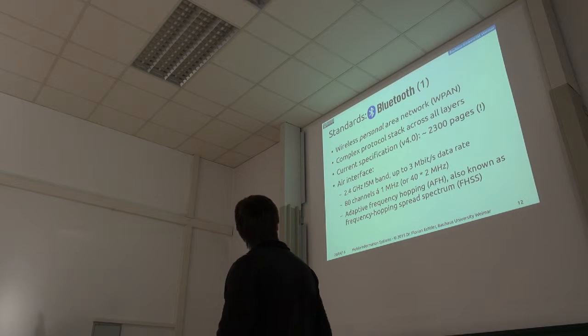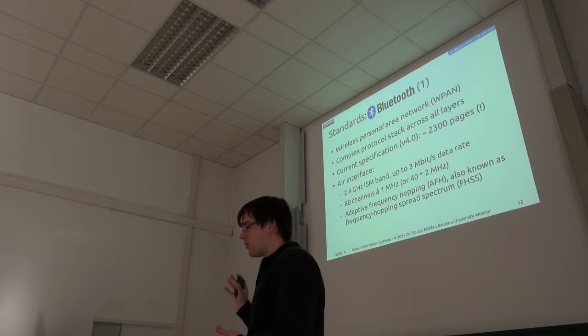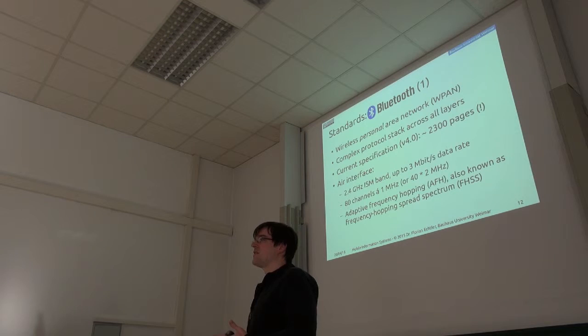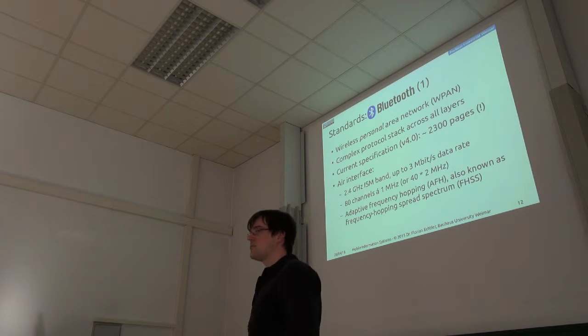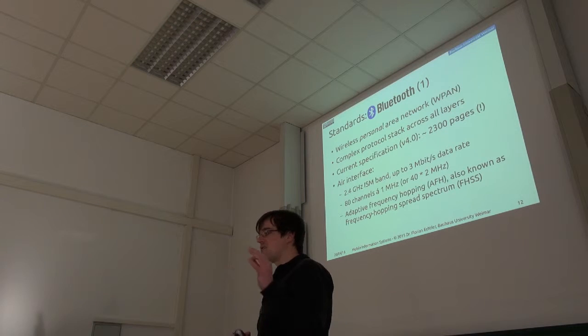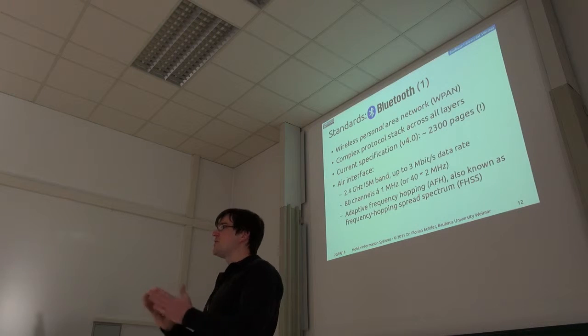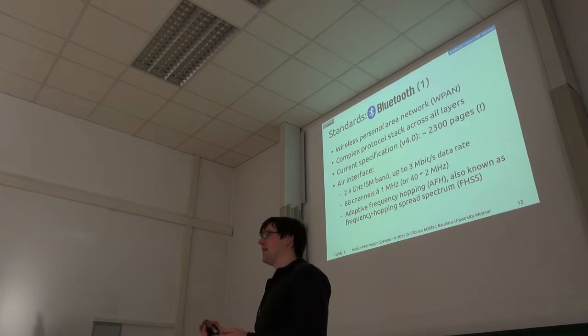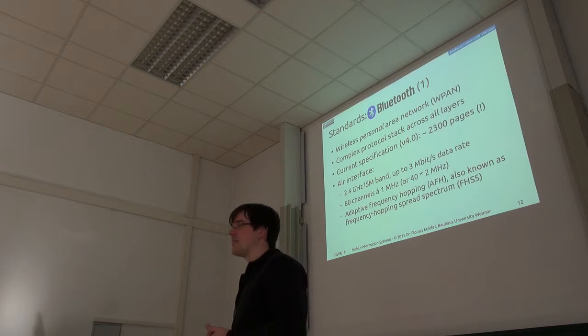The so-called air interface for Bluetooth, where it actually transmits the data, is in the ISM band. We talked about these last time. These are license-free bands where everyone's allowed to transmit, but of course that also means you get lots of noise and interference. This is divided into 80 channels of 1 megahertz bandwidth, and it uses this frequency hopping spread spectrum method. So it rapidly switches between those 80 channels in a more or less random sequence, but random in such a way that the receiver is able to pick out the correct channel for a transmission and switch to that basically in lockstep with the transmitter.